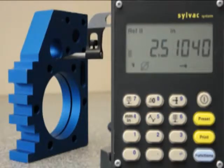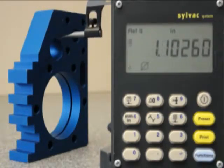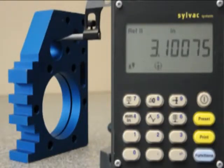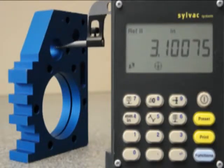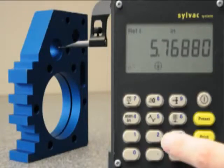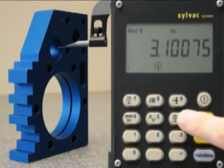Simply continue up by measuring the second bore. Sweep the low point, sweep the high point. Once I release, I get the center line distance between my two bores. By pressing the ref key again, I get my overall distance to that center line. Then I can zero again in ref2.